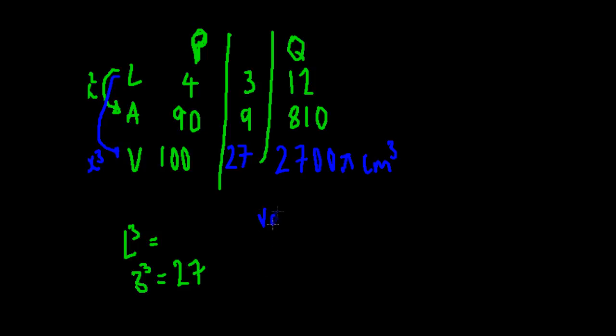Volume of Q equals 2700π cm³, and we've answered both questions with this simple grid here with the information they provided, which was 90 and 810. We worked out the multiplier for that, and because the length is the square root of that, we got back to 3. The volume is to the power of 3 of the length, so 3 to the power of 3 equals 27.